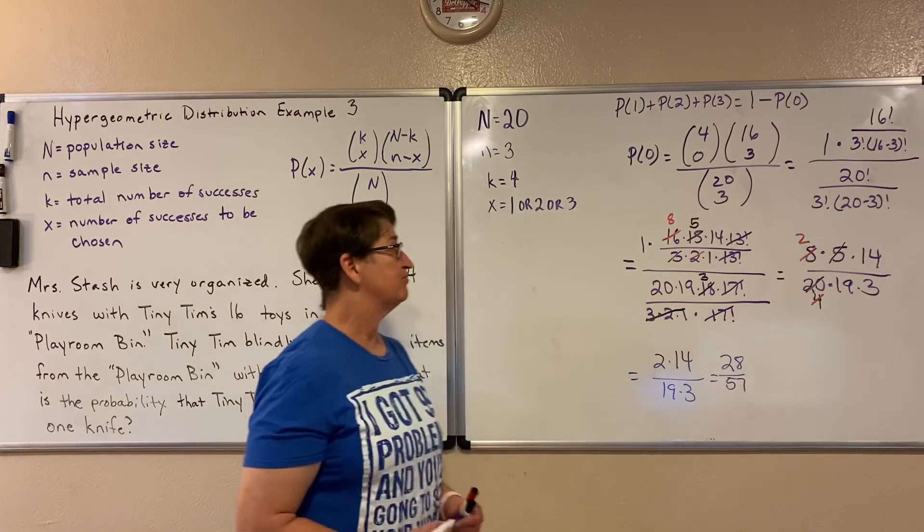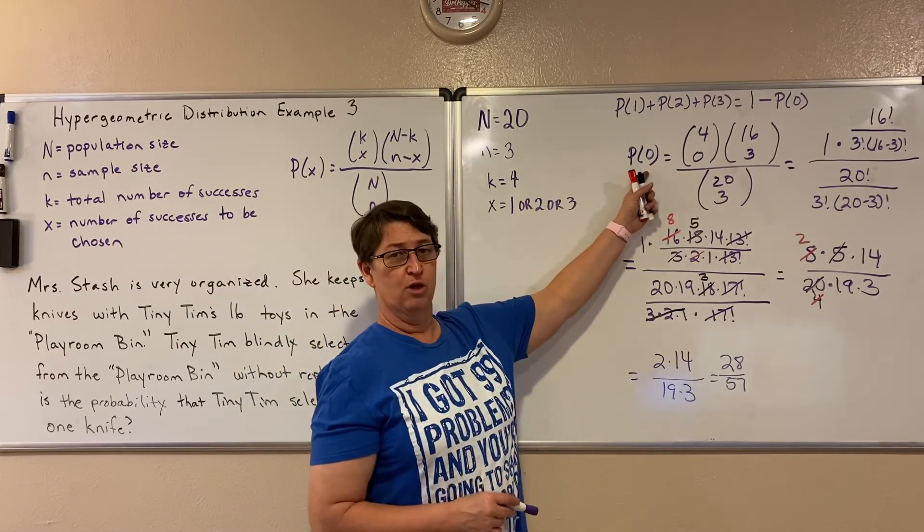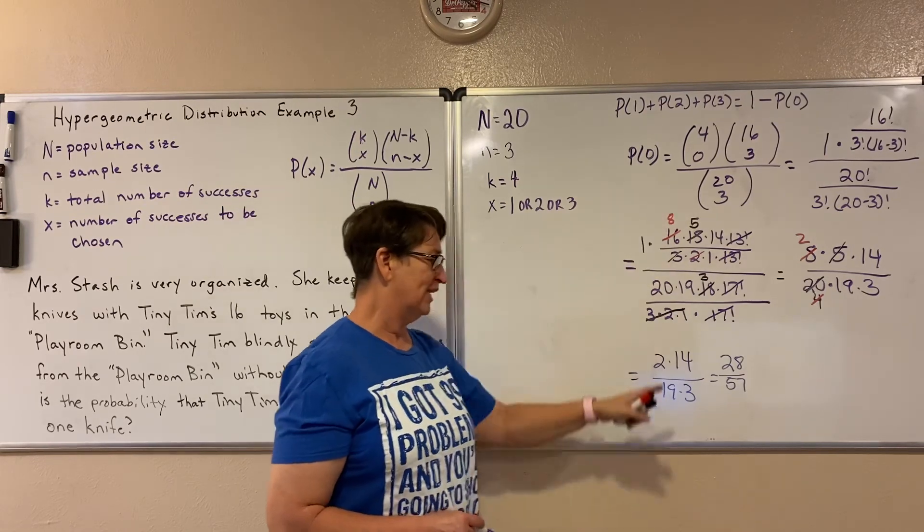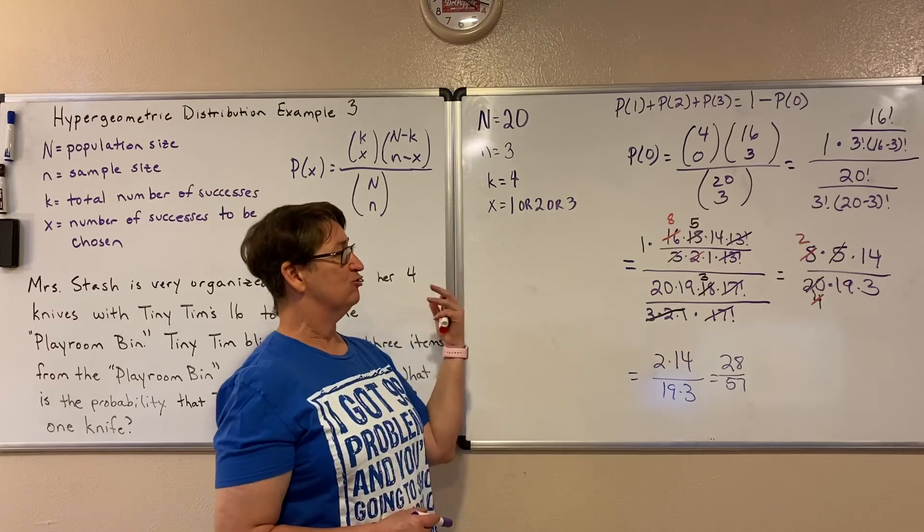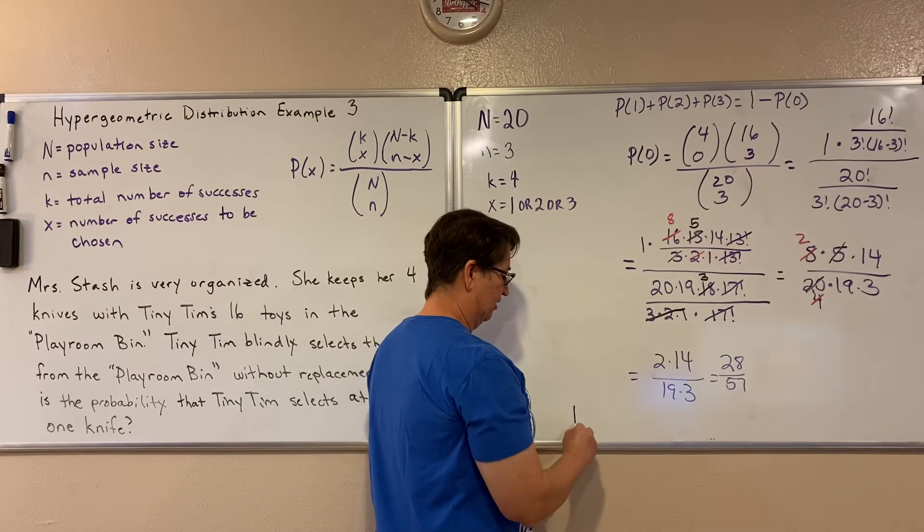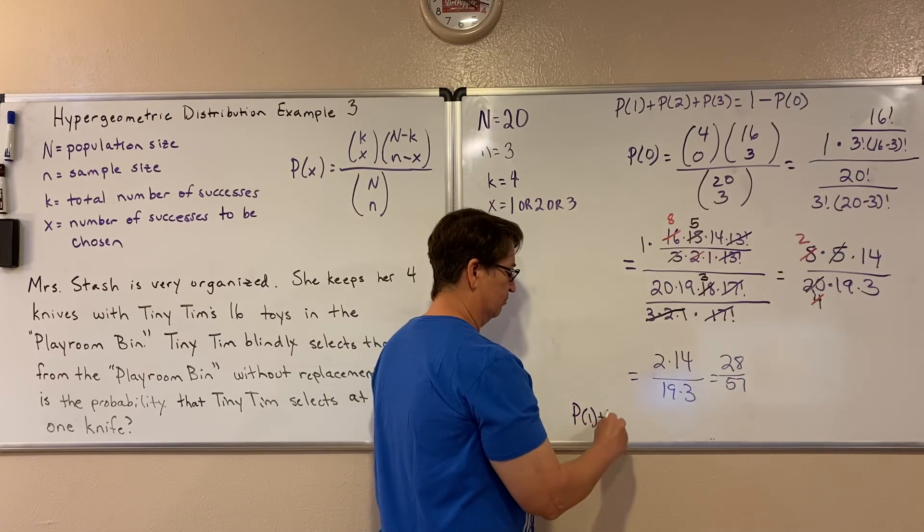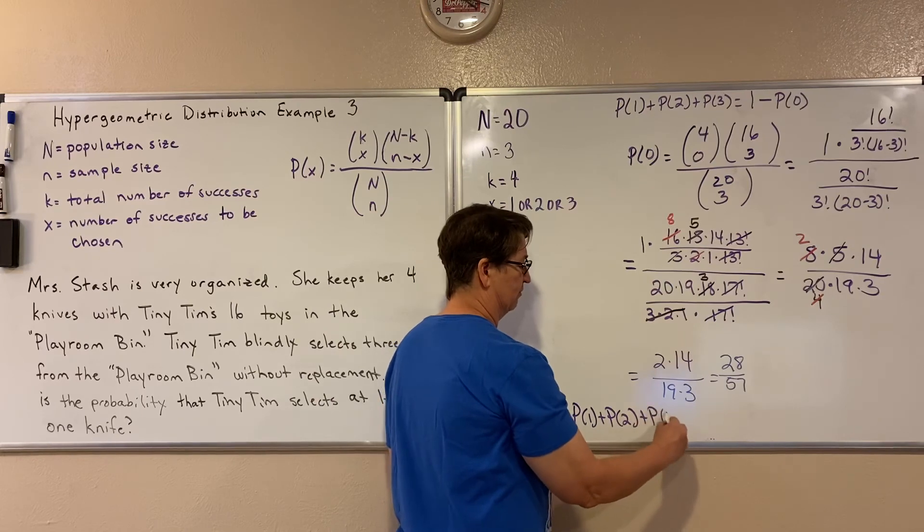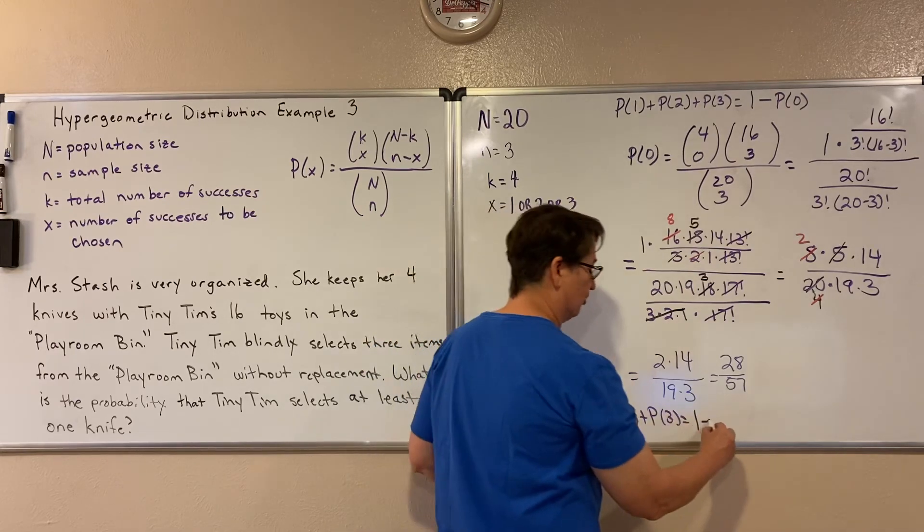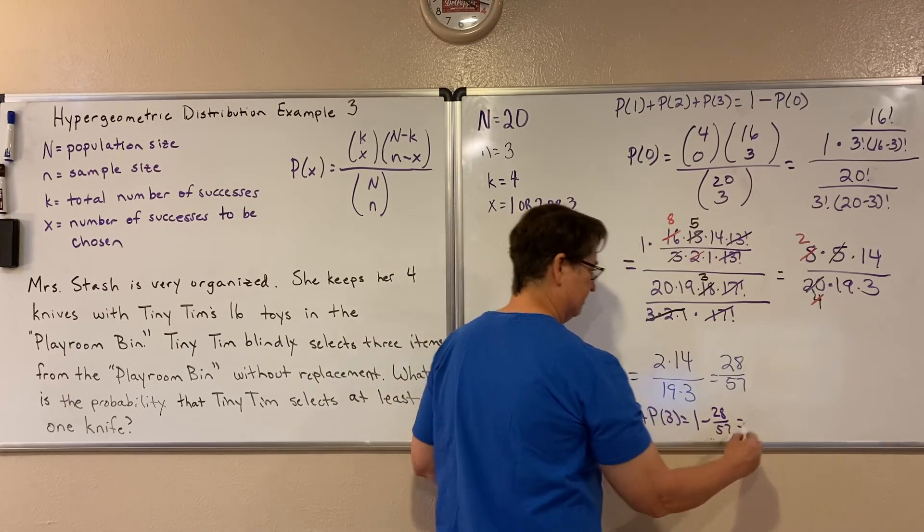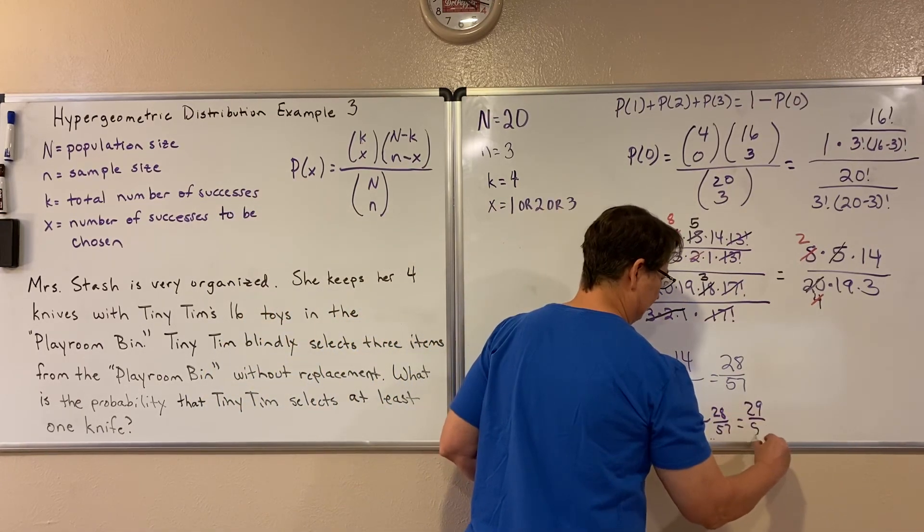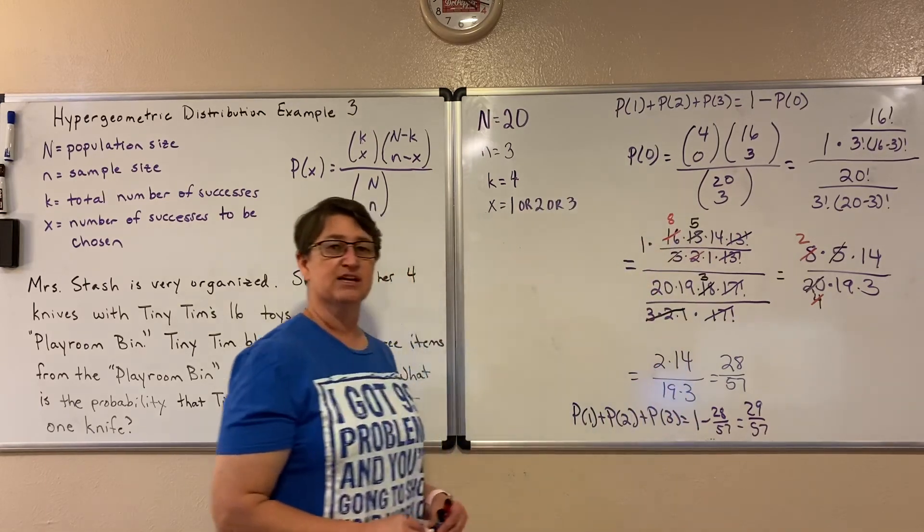Now what I've just found is the probability of zero. But we want to know what's the probability that Tiny Tim gets at least one. So we need to take that. And in order to find out at least one, we're going to subtract that from the whole set. So now we're going to take to find the probability of one plus the probability of two plus the probability of three, we're going to take the whole set plus zero, subtract off that zero, the probability of zero, and we end up with 29 over 57 is our probability that he gets at least one knife.